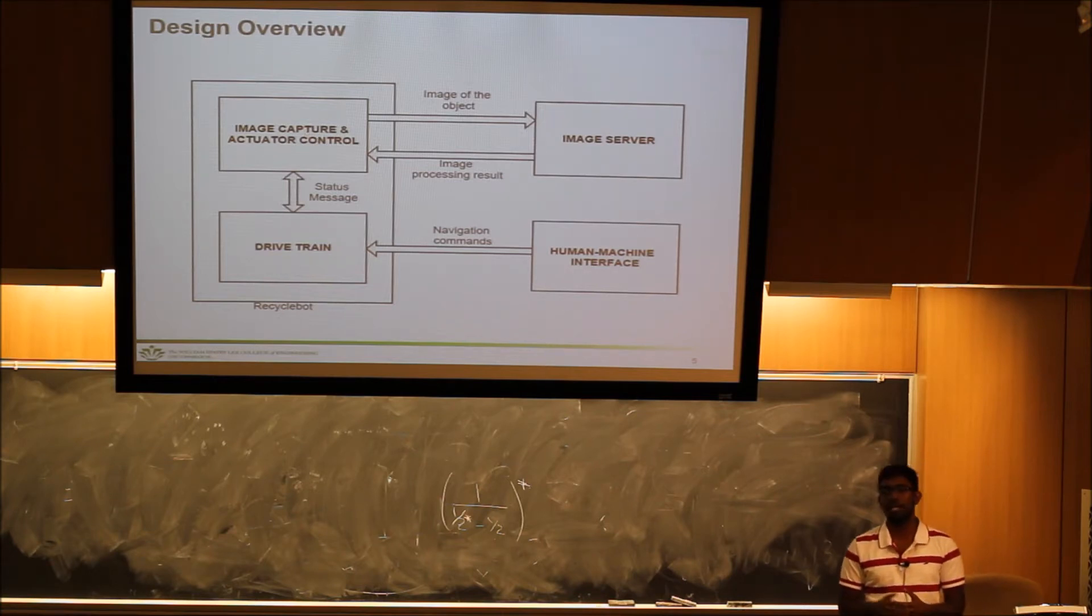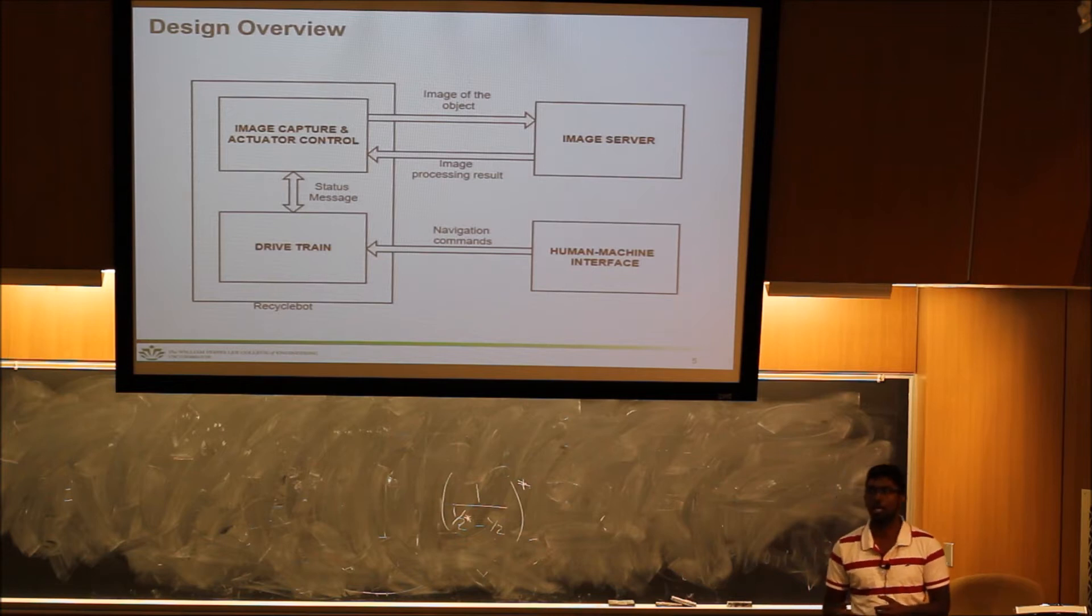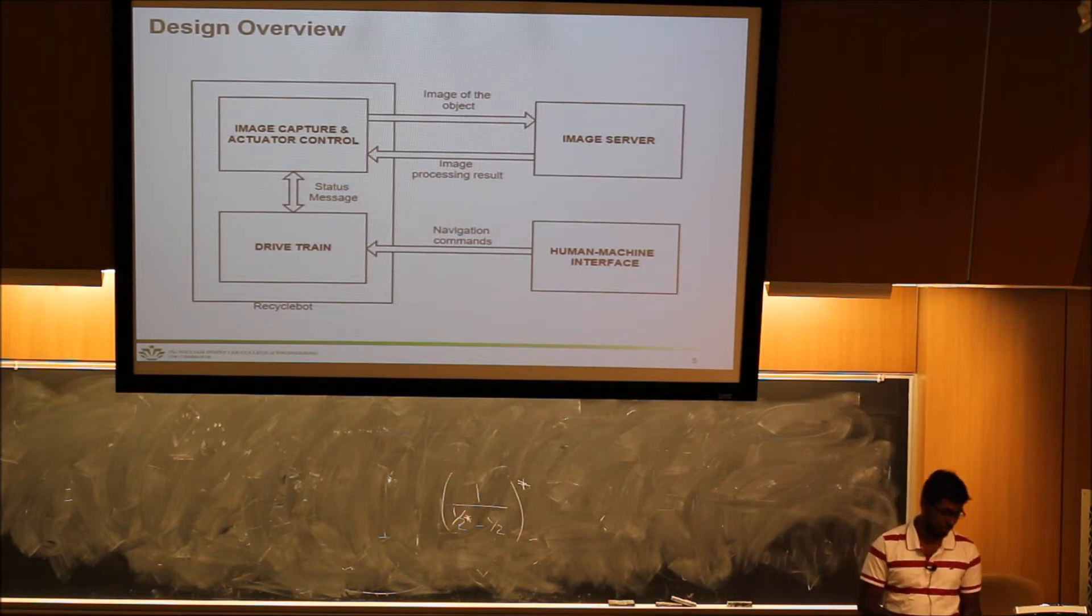Once it knows the result, it has an actuator which tilts on either side of the bin so that the waste object slides towards the corresponding bin. Then we have a drivetrain which is essentially a low-level API for controlling the motor controller and receives commands from the human machine interface.